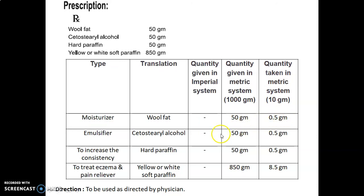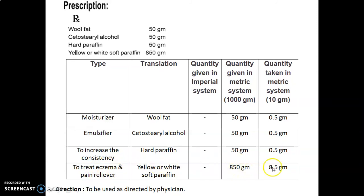Cetostearyl alcohol is used as an emulsifier; quantity given is 50 g, so quantity taken is 0.5 g. Hard paraffin is used to increase consistency; quantity given is 50 g, so quantity taken is 0.5 g. Yellow or white soft paraffin is used to treat eczema — that is, inflammation or swelling — and as a pain reliever; quantity given is 850 g, so quantity taken is 8.5 g. Direction: to be used as directed by physician.